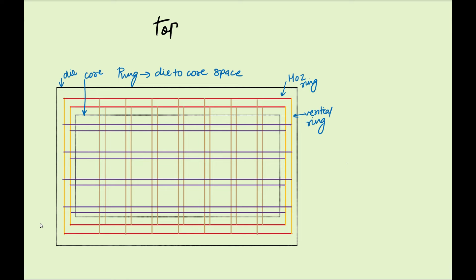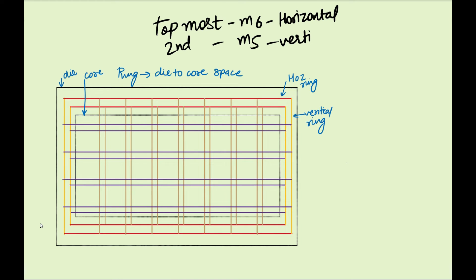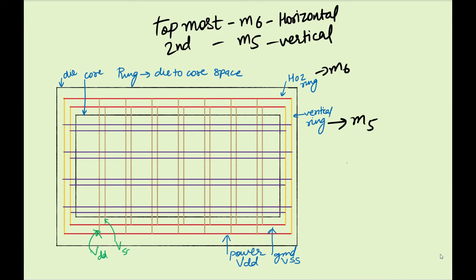The top two layers are your vertical and horizontal routing resources used for power routing. Let us assume M6 is the topmost and M5 is the second topmost. So M6 is horizontal and M5 is vertical. The outermost ring is your power ring (VDD) and inner to that is your ground ring (VSS). The brown colored layer taps the power — VSS, then VDD, alternating — and vias connect them accordingly.